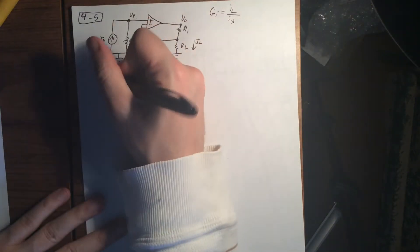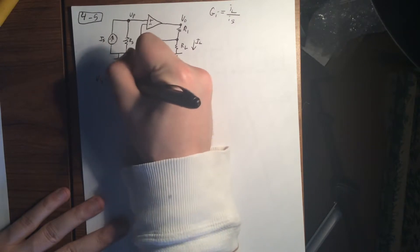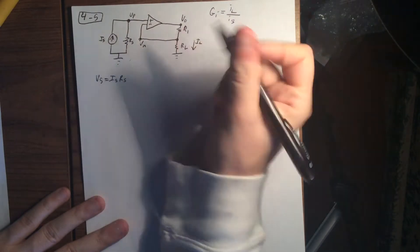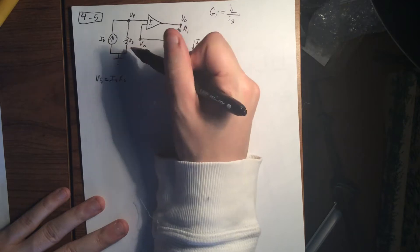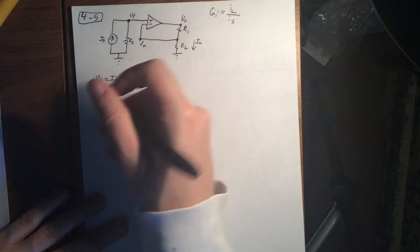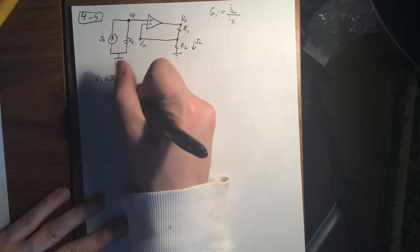So the first bit we do is Vs equals IS*RS. V equals IR. That's for our source. That's our resistor. So we're going to be able to redraw that just like we did in Chapter 2.